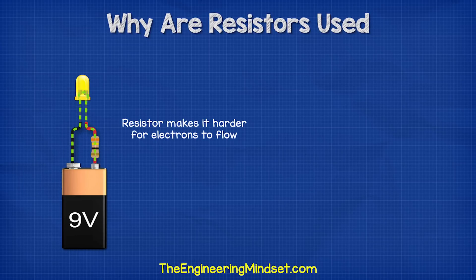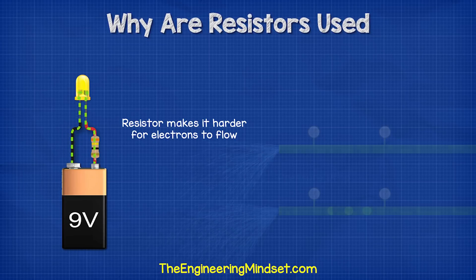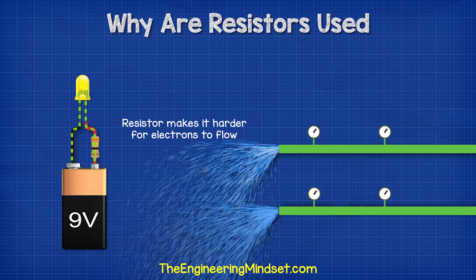Resistors make it harder for electrons to flow through a circuit, and that's why we add resistors to circuits — because they reduce the current.